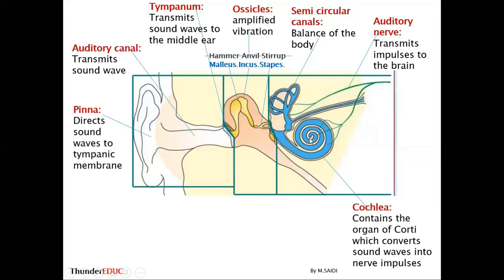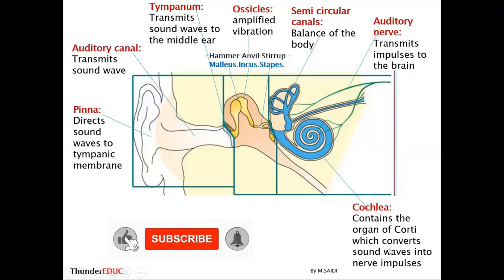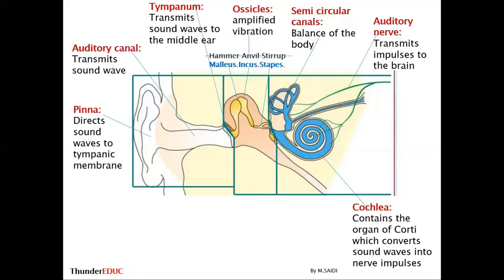The cochlea is a coiled part, and when talking about hearing you have to uncoil it. It contains the organ of Corti, which converts sound waves into impulses. The organ of Corti has sensory cells that detect changes in pressure and are stimulated depending on how much pressure is applied, then convert that pressure or waves into an impulse that is sent to the brain for interpretation.